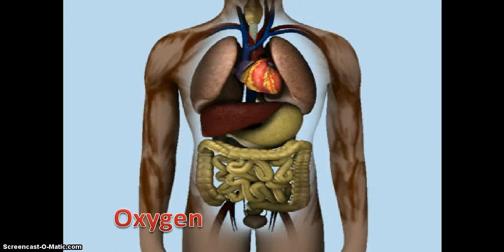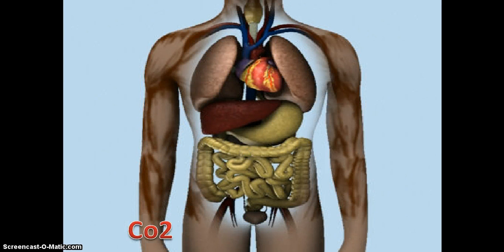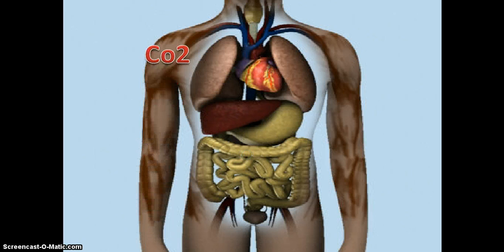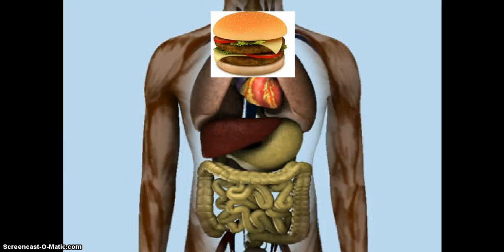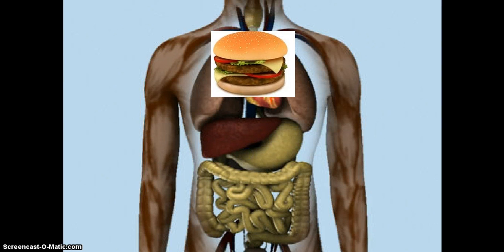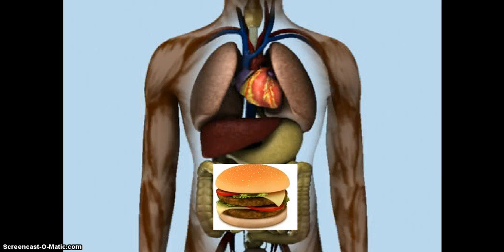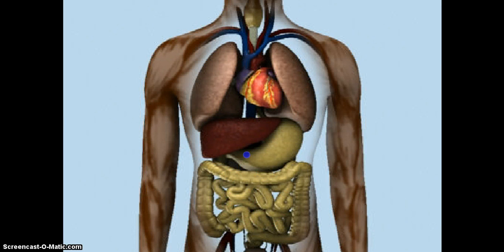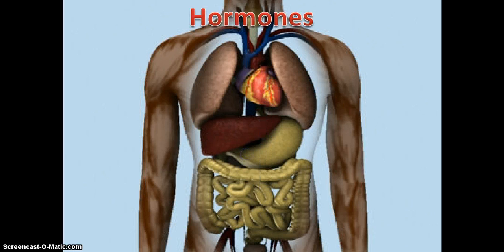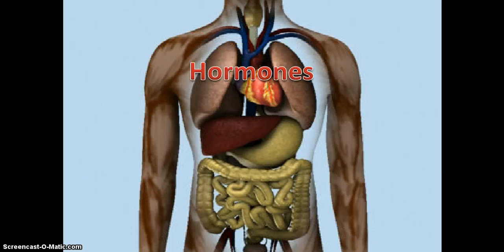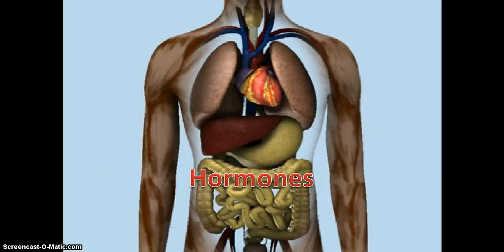Blood carries carbon dioxide from the body cells to the lungs for breathing out. Blood carries digested food from the small intestines to all the parts of our body. Blood carries hormones from the endocrine glands to different organs of the body where they are needed.